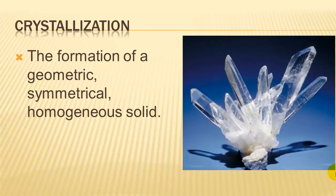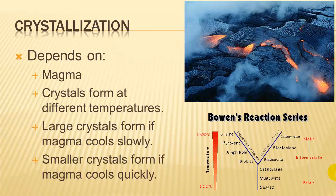Crystallization is the formation of a geometric, symmetrical, homogeneous solid. Homogeneous means the rock or crystal is the same throughout. Symmetrical — we can have radial or bilateral symmetry, just like in math class. Crystallization depends on the type of magma, and different crystals form at different temperatures. It also depends on how fast the magma cools. If magma cools slowly, then large crystals can form. If magma cools quickly, then very small or no crystals can form.